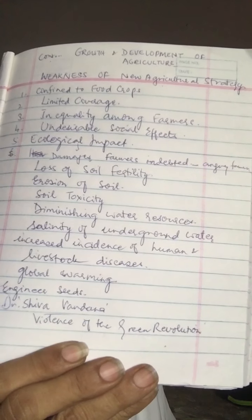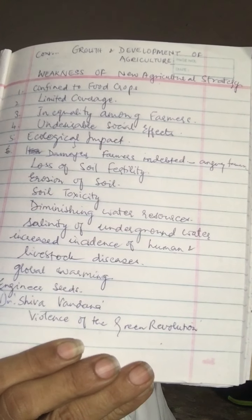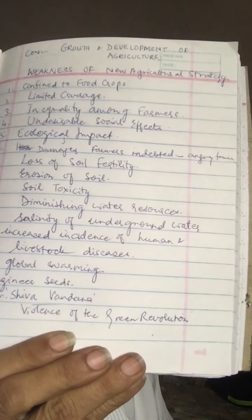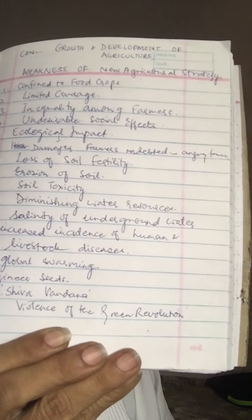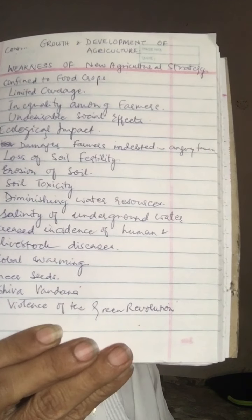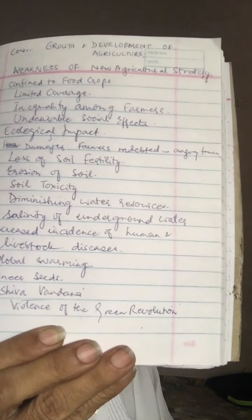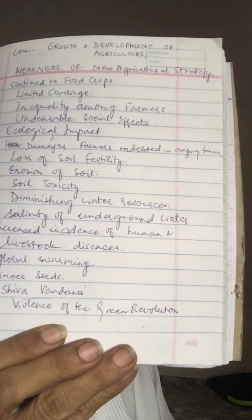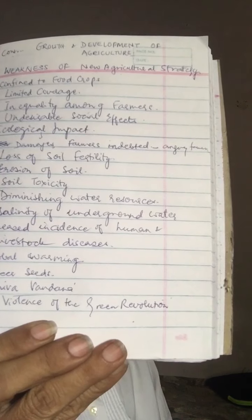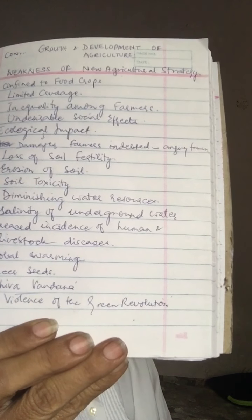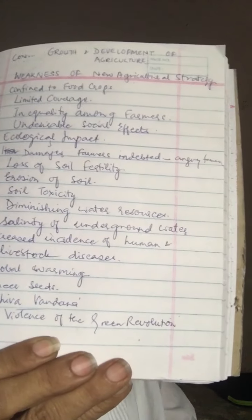Regarding the ecological impact, excessive use of chemical fertilizers and pesticides led to degradation of the environment — causing pollution in land, water, and air. Harmful effects were also noticed in terms of increased farm accidents, and farmers and workers suffered health problems due to the increased use of poisonous insecticides, pesticides, and fertilizers.